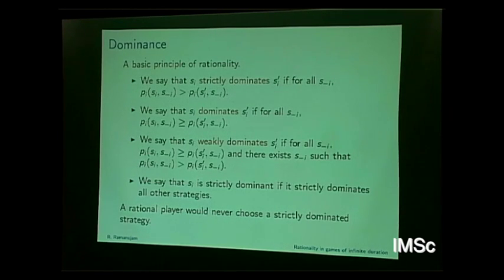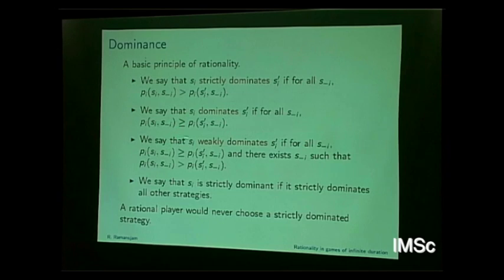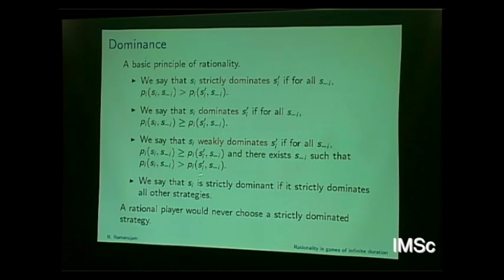The basic principle of rationality is that of dominance. We say S_i strictly dominates S_i prime if, for every choice the opponents make, the payoff with S_i is strictly greater. S_i dominates if the inequality is general (greater than or equal), and S_i weakly dominates S_i prime if player i is better off with S_i for all opponent strategies, and there exists at least one scenario where strictly better off. A strategy is strictly dominant if it strictly dominates all other strategies.